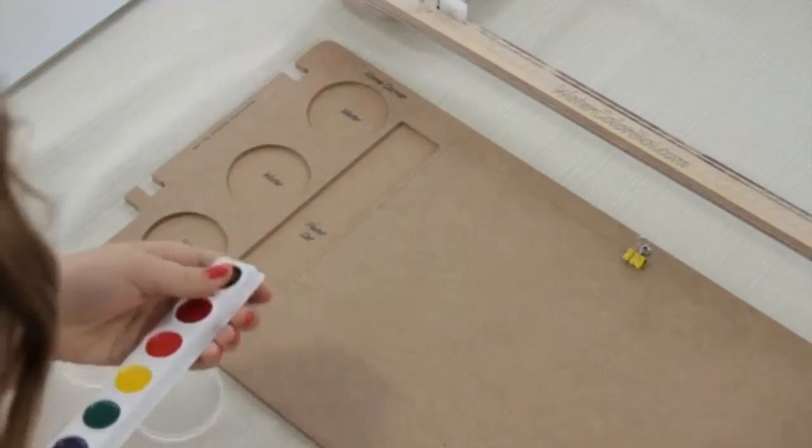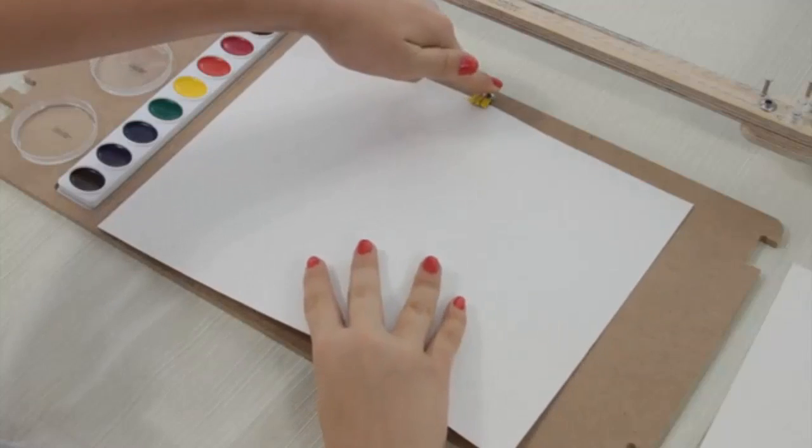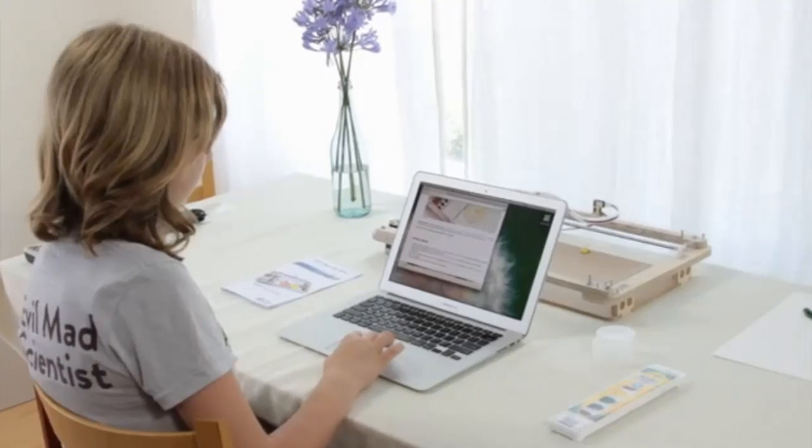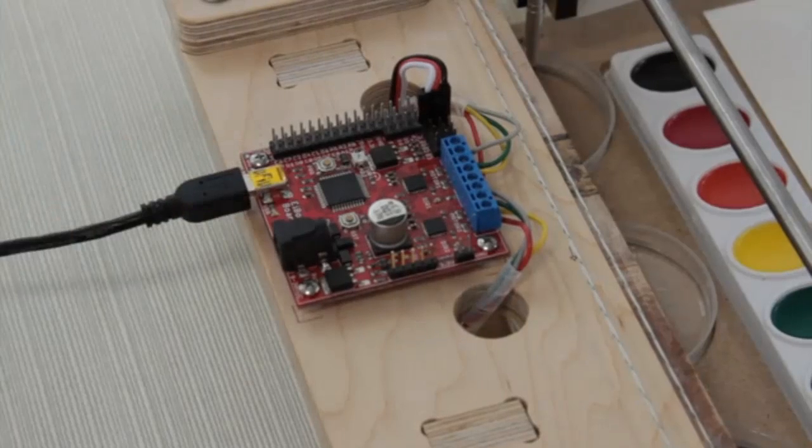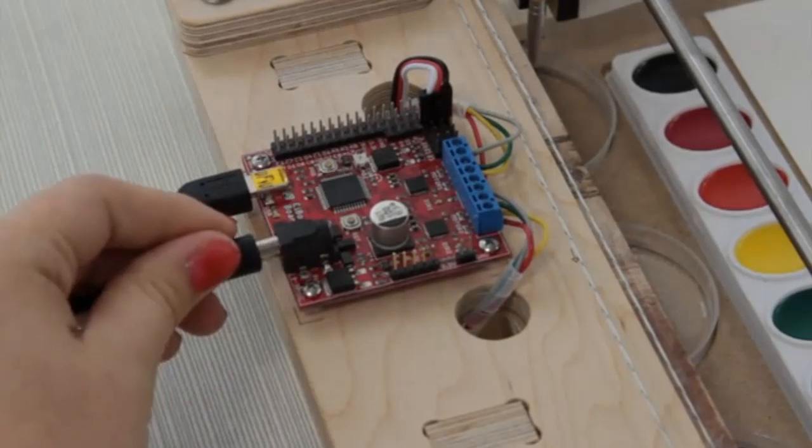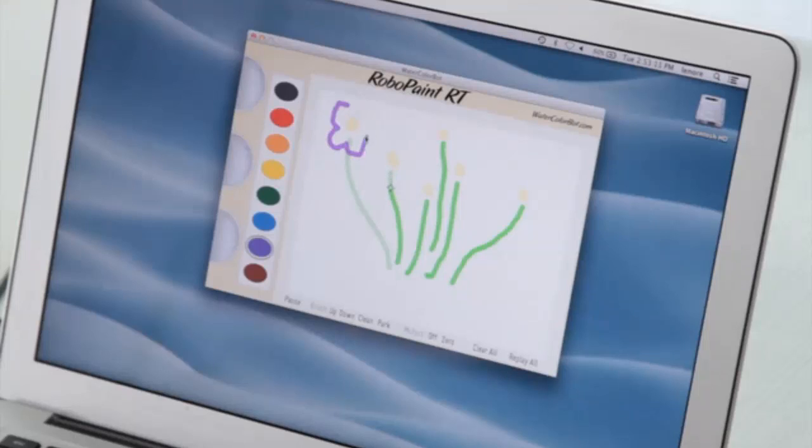The Watercolor Bot uses a regular set of watercolors and uses standard 9x12 watercolor paper. You can make a drawing on the computer for the Watercolor Bot to paint or start with existing vector artwork.